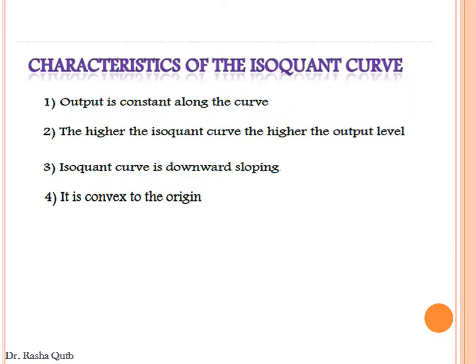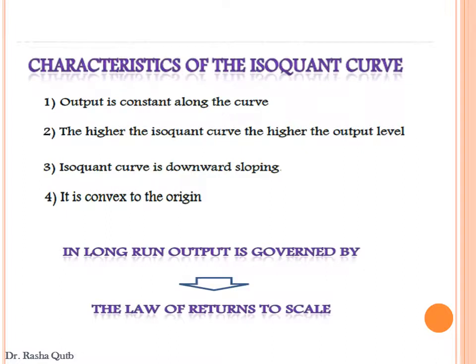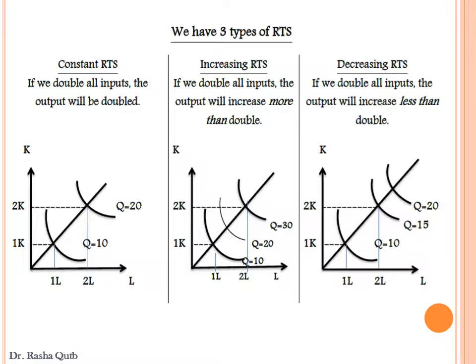In the long run, output is governed by the law of returns to scale — the rate at which output increases as a result of a proportional increase in all inputs. There are three types: constant returns to scale, where increasing all inputs by a certain proportion increases output by the same proportion; increasing returns to scale, where output increases by more than the proportion of input increase; and decreasing returns to scale.